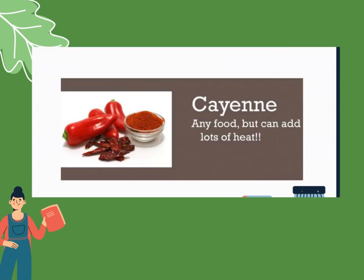Next, cayenne. You can use cayenne in any food, but it adds lots of heat. Examples of cayenne include habanero, cayenne pepper, serrano, tabasco, jalapeño, poblano, pepperoncini, and the common sweet bell pepper.